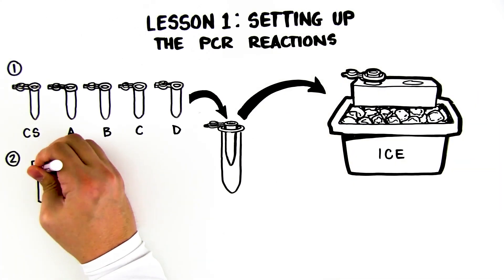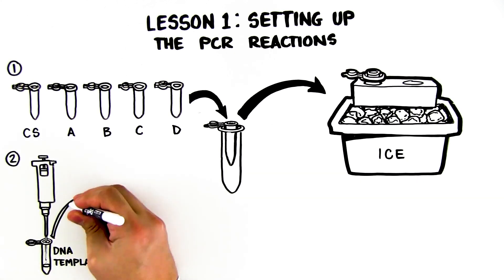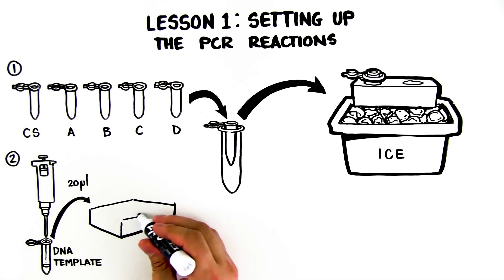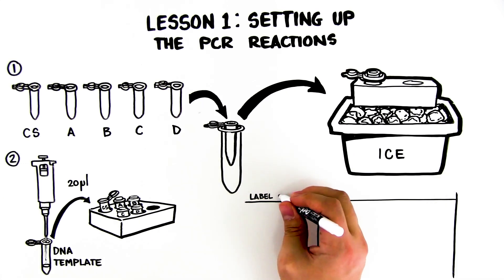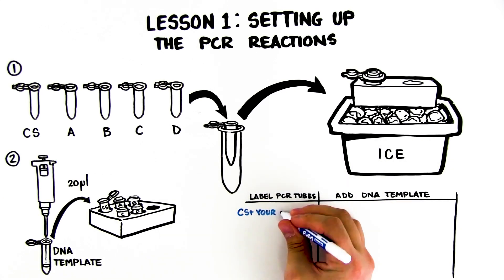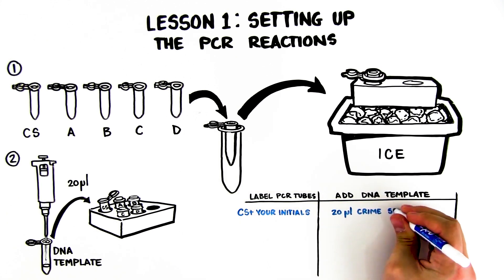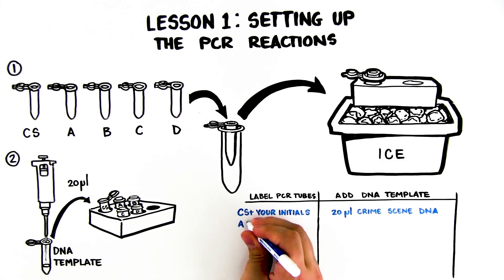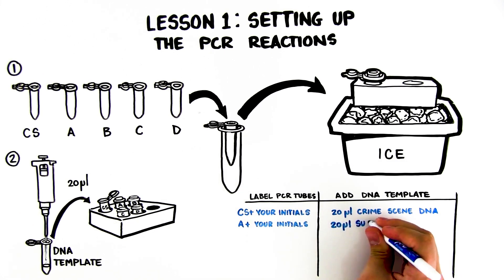Step 2: Using the chart as a guide, transfer 20 microliters of the appropriate template DNA into the correctly labeled tube. Use a fresh aerosol barrier pipette tip for each DNA sample. In a PCR tube labeled CS plus your initials, add 20 microliters crime scene DNA. In a PCR tube labeled A plus your initials, add 20 microliters suspect A DNA.